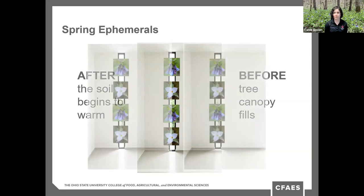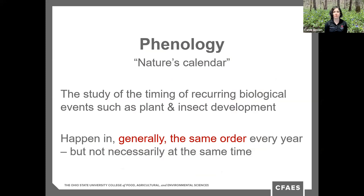The timing of this narrow blooming window can shift considerably from year to year, and that is what we're going to take a closer look at first. You may be familiar with the term phenology, also known as nature's calendar. Phenology is the study of the timing of reoccurring biological events such as plant and insect development.